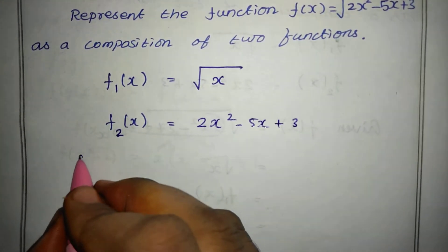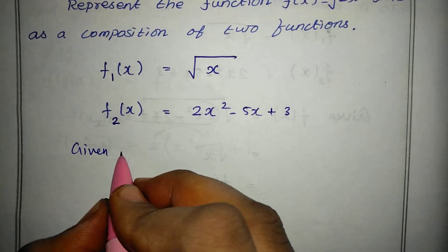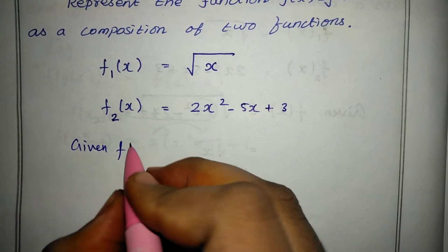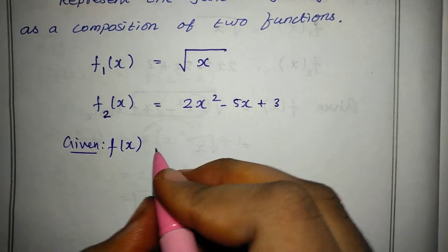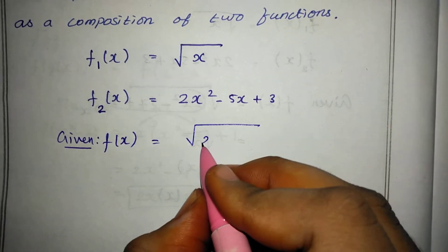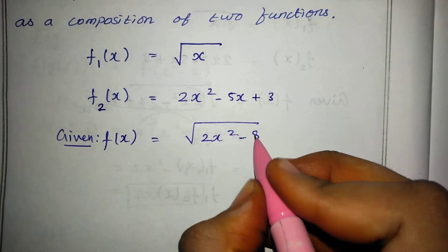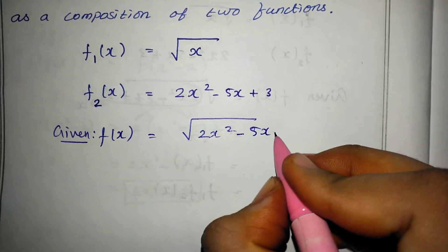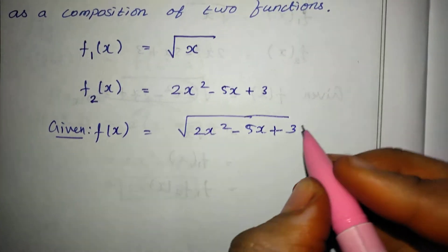Now the question is given. We have f of x is equal to root of 2x squared minus 5x plus 3.